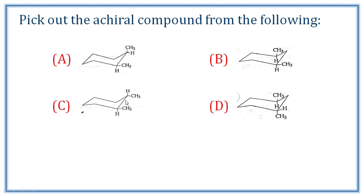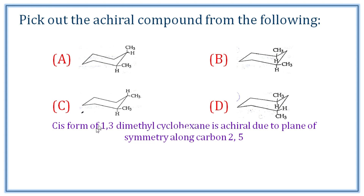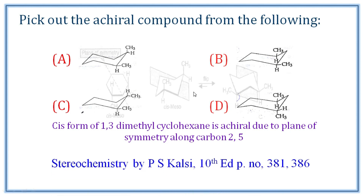Option C is trans-1,2-dimethylcyclohexane and Option D is 1,3-dimethylcyclohexane. Among the cis-trans isomers, compound A (cis-1,2-dimethylcyclohexane) is chiral — you cannot draw a plane of symmetry through it, so it is non-chiral in the opposite sense. The cis form of 1,3-dimethylcyclohexane has a plane of symmetry through the 2-methyl groups, making it achiral due to plane symmetry.